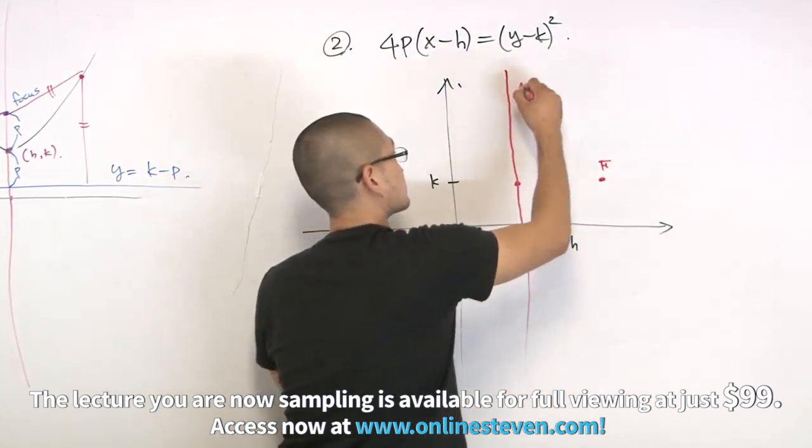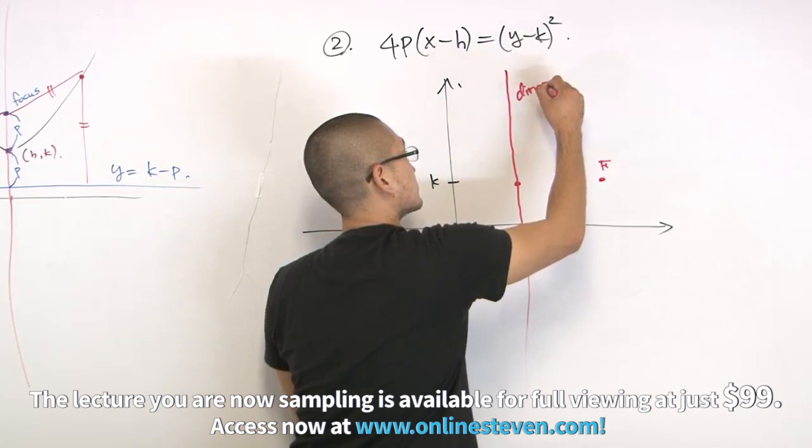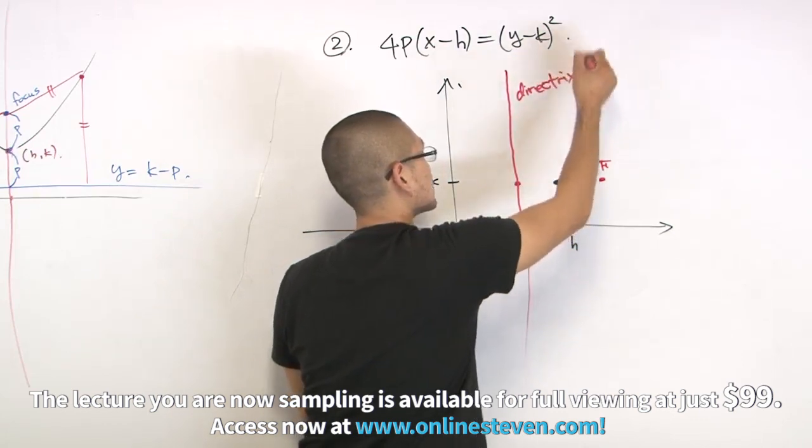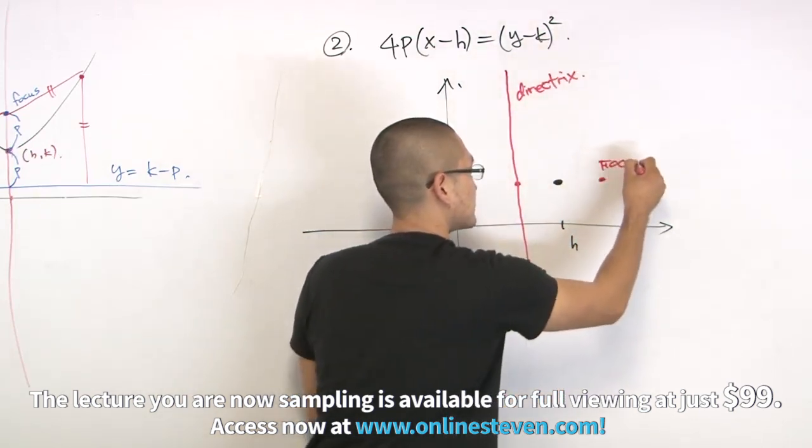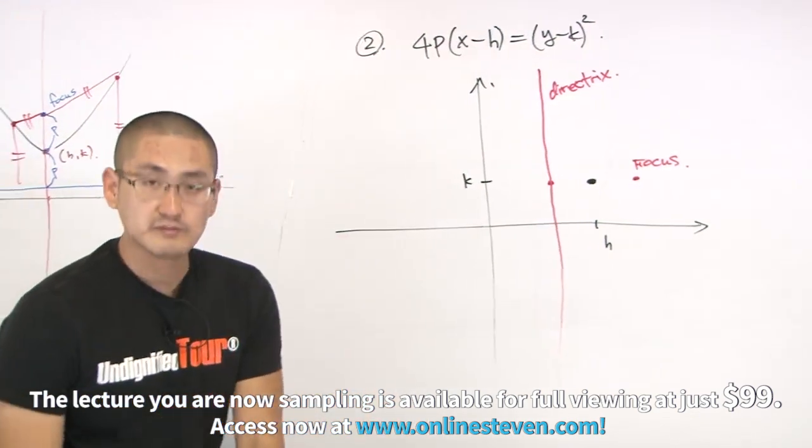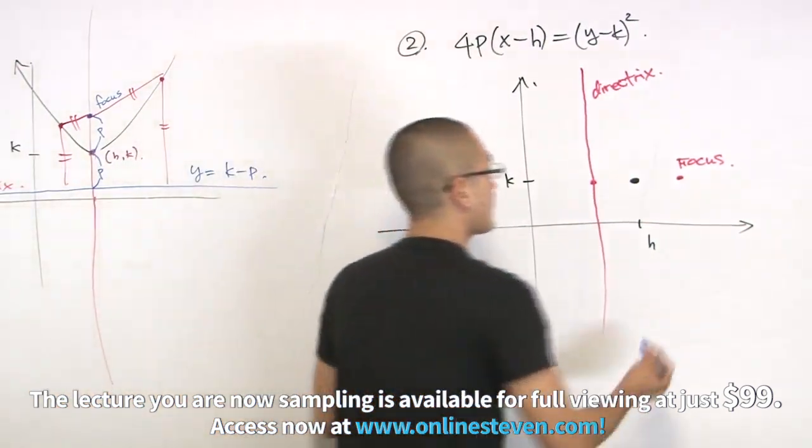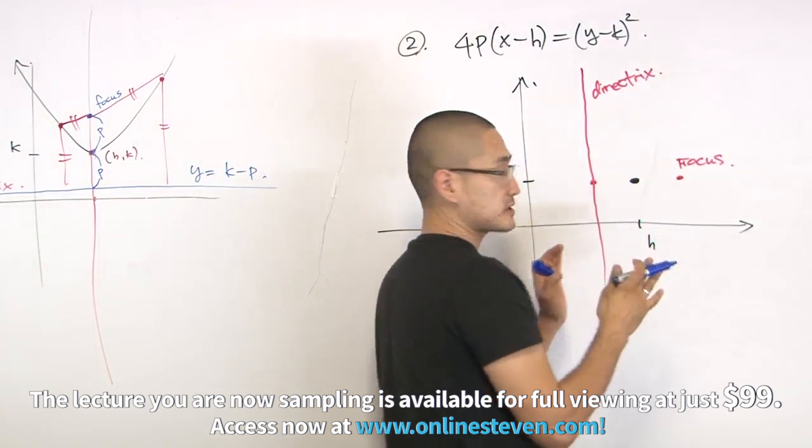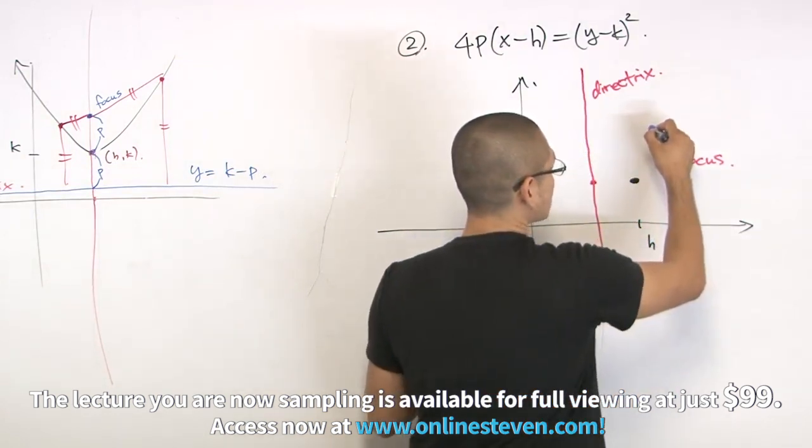Let's set up the focus here and the directrix here. So it's going to go through this straight line. Here's the line, directrix. Here's the focus. So what we're doing with this parabola, the parabola comes about collection of all the points that are same distance from the directrix.